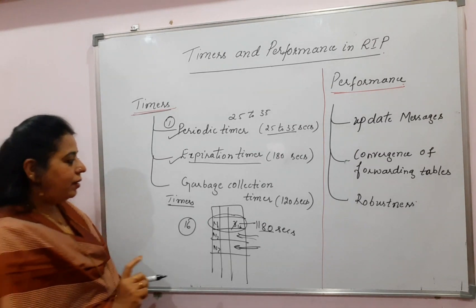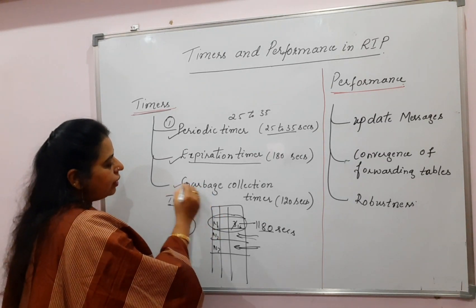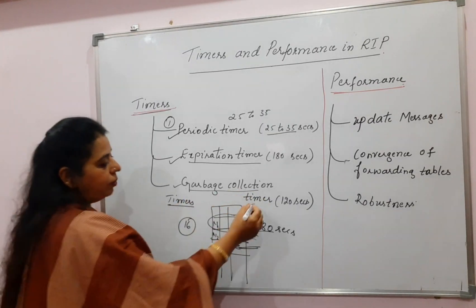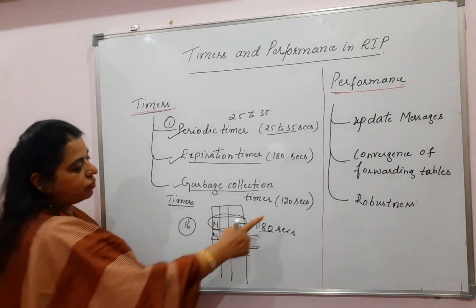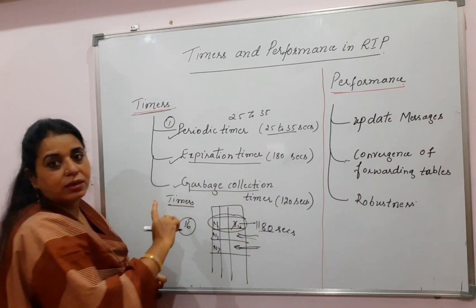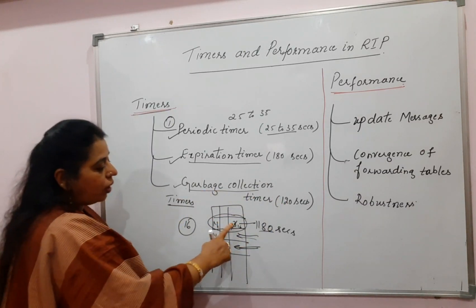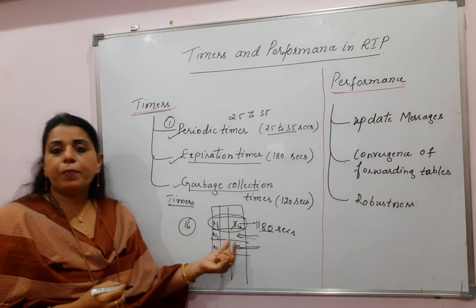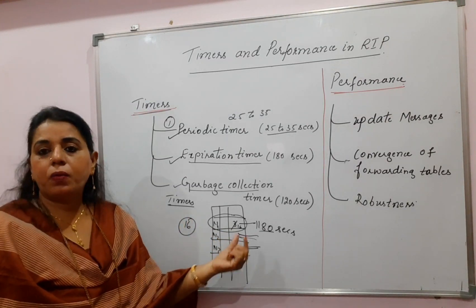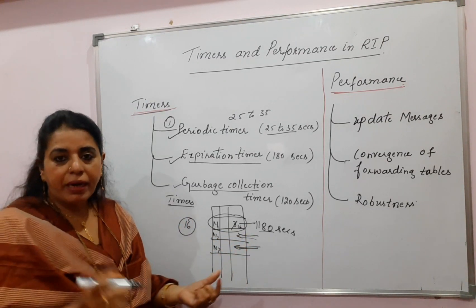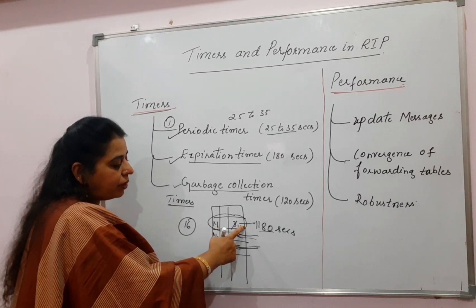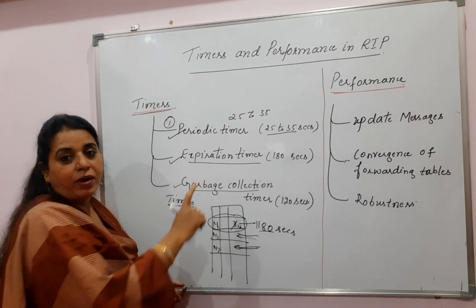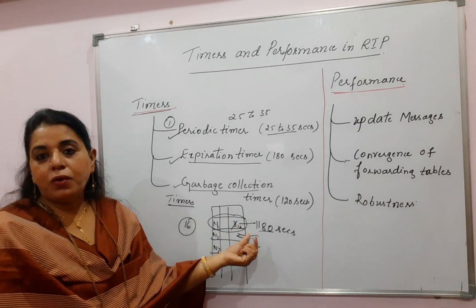The third type of timer is the garbage collection timer, and its value is 120 seconds. When the route cost is set to 16, the router still tries to propagate that route information in the network, but at the same time it sets the garbage collection timer to 120 seconds. Once the value reaches zero for this timer...